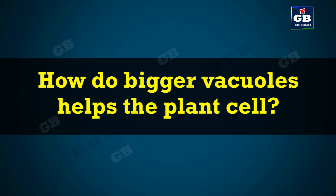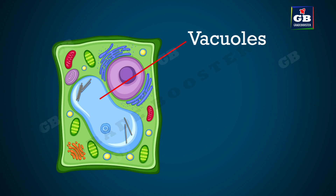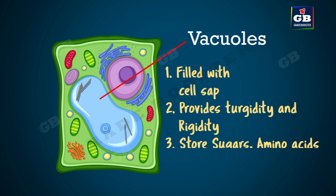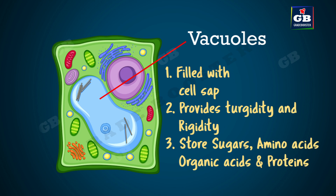How do bigger vacuoles help the plant cell? The vacuoles in the plant cell are filled with cell sap and provide turgidity and rigidity to the cell. They store many important materials like sugars, amino acids, various organic acids, and some proteins.